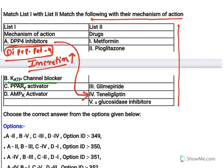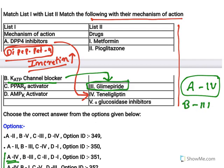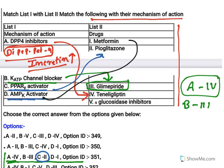Potassium ATP channel blockers are sulfonylureas — glibenclamide, glimepiride, all of them — so B matches with three. When you know A matches with four and B matches with three, only one option has both, so that is the answer. C is PPAR-gamma activators — pioglitazone and rosiglitazone — so C is two. D, the AMP kinase activator, is metformin, so D is one.